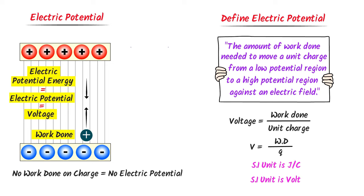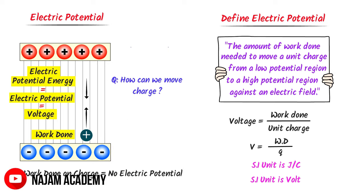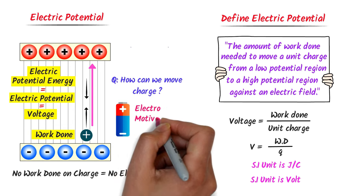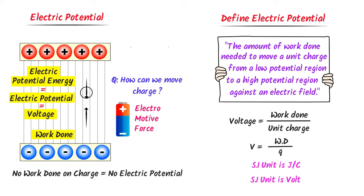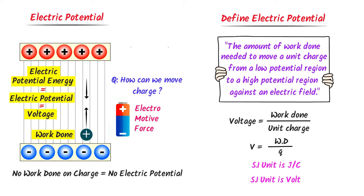We know that an electron is extremely small, which we cannot touch or see. So how can we do some sort of work or move this electron in an electric field? Well, we use EMF or a chemical battery to drive this electron from low potential region to high potential region. EMF or electromotive force derives electrons from low potential region to high potential region, or we can say that it keeps a constant flow of current in the electric circuit. Thus, electric potential or voltage is generated when we do some sort of work on a test charge to displace it against the electric field.